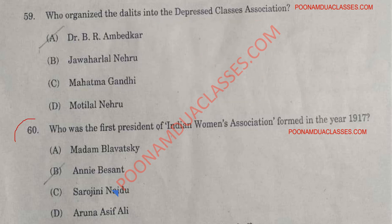The last question of this video, question number 60: Who was the first president of the Indian Women's Association formed in the year 1917? The correct answer is option B — Annie Besant. The association was founded in 1917 in Madras by Margaret E. Cousins, and its first president was Annie Besant. Option B is the right answer.